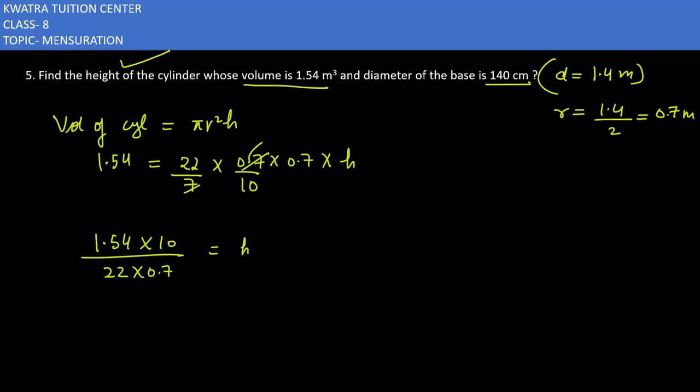You can remove the decimal points. If you remove the point, it will give you 100 here. If you remove point from 1.54, then 100 will multiply. Then cancel.